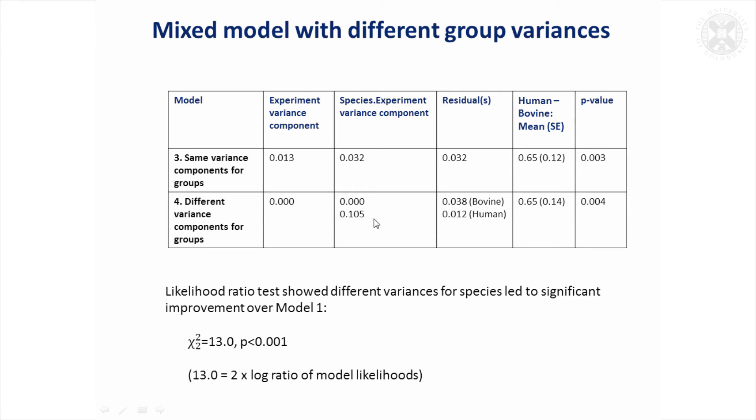A mixed model could allow for different variances between the groups. If we do that here, if we allow different variances for the groups, then we've got this different species by experiment variance component we can have different for the bovine and the human groups. So the humans are varying more in terms of how much the species effect differs between the experiments, and the residuals, which is how much the technical replicates are varying, the bovine samples are varying more. And you might think, was that just by chance? We've only got small amounts of data, maybe it was just a chance result, and you can actually test that. There's something called a likelihood ratio test which you can use to compare the models and see if this model with different variances is a significant improvement over the one that assumed the groups have the same variances.